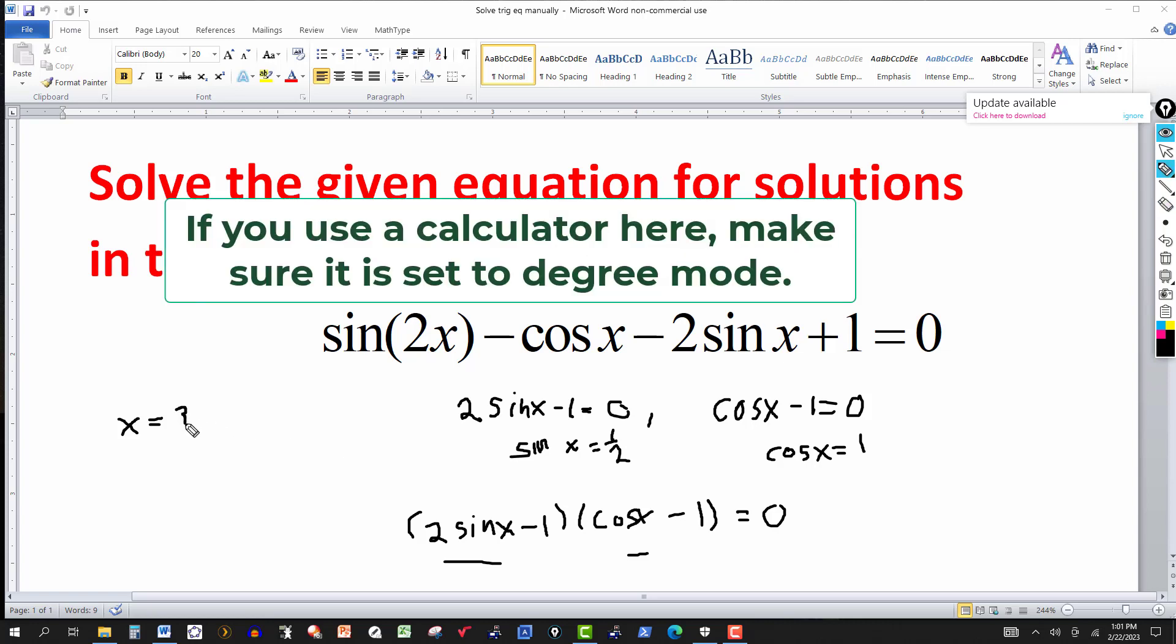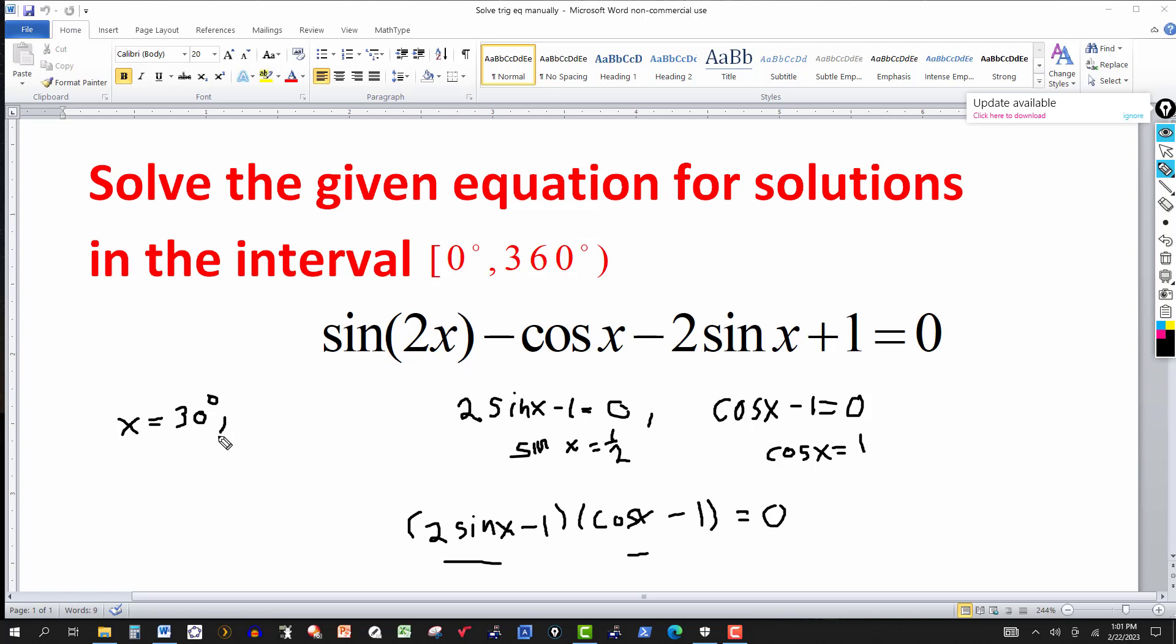And that should give you 30 degrees. And then use that 30 degrees as your reference. So that means 180 minus 30 should be another answer, since the sine is positive in quadrant two. So the other solution would be 150 degrees.